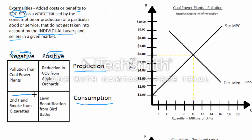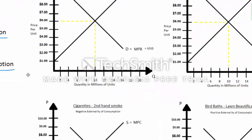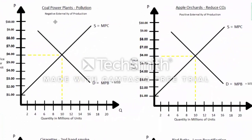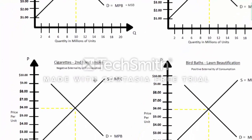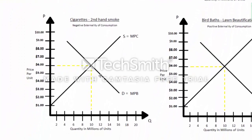We're going to take one example here — we'll start with the secondhand smoke from cigarettes — and do the graph analysis with the supply and demand curves. Then we'll take a couple of key takeaways for the other three and quickly go through how they're related. So we've got negative externality of production, like coal plants and pollution, and we've got reducing CO2, and we've got the birdbaths and cigarettes — the secondhand smoke — which is where we're going to focus.